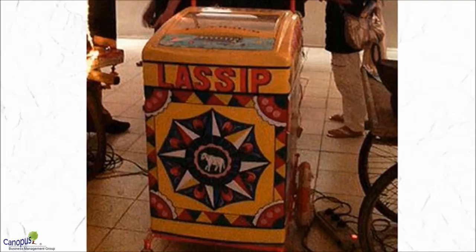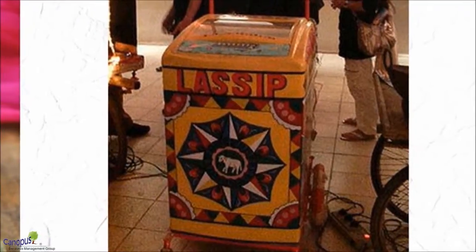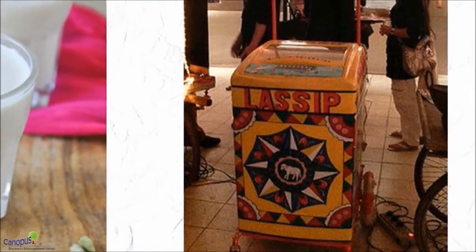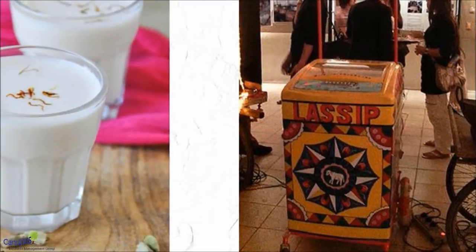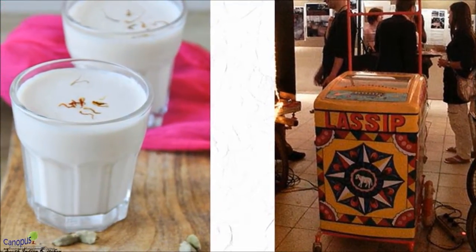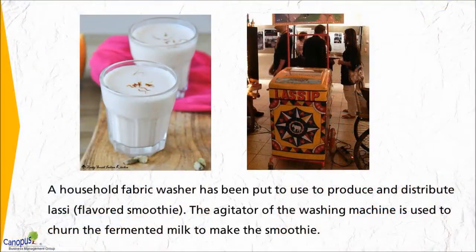In this example, a household fabric washing machine has been put to use to produce and distribute what we call Lassi, which is an Indian flavored smoothie. The agitator of the washing machine is used to churn the fermented milk to make the smoothie. This is one of the most amazing examples of this principle of SCAMPER.